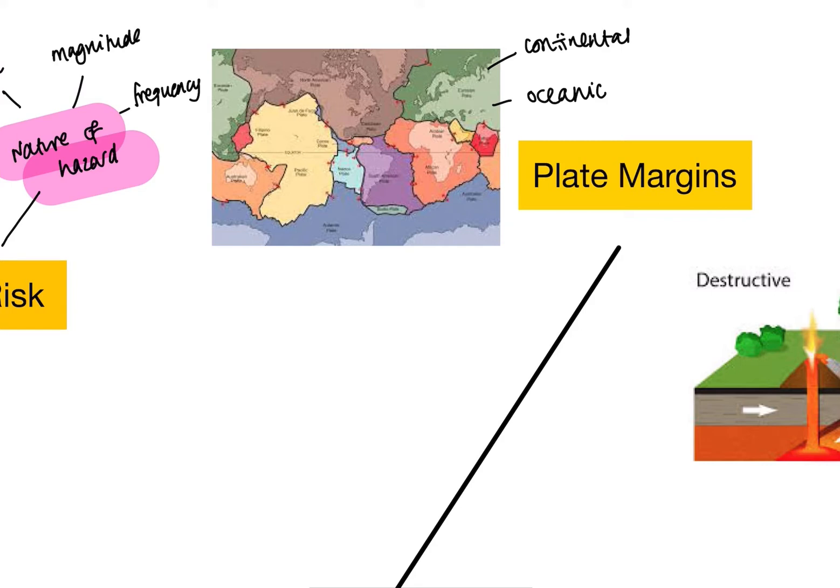Our oceanic crust is the opposite, so it'd be thinner and more dense. Our plate margins are places on this map, like where I'm highlighting here on the screen, where our two tectonic plates are meeting. The red lines here are showing us the directions in which these plates are moving. And that influences the different things that we see happening.